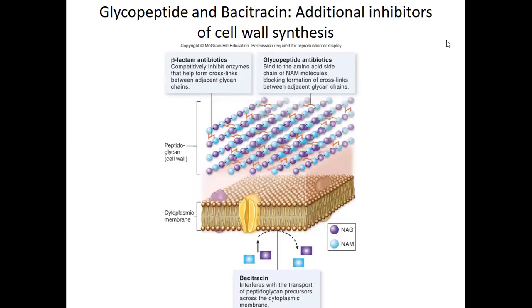Another inhibitor of cell wall synthesis is bacitracin. What's really interesting about bacteria is that because of their cell walls, they can't really do endocytosis and exocytosis. So they are heavily dependent upon protein channels to move things in and out of their cells. What bacitracin does is it actually interferes with the transport of NAG-NAM sugar molecules that are going to be put together to make the cell wall — it interferes with their transport across the cell membrane.